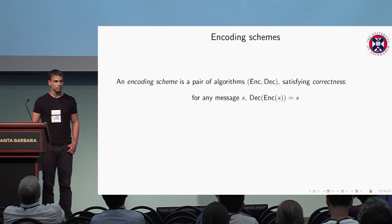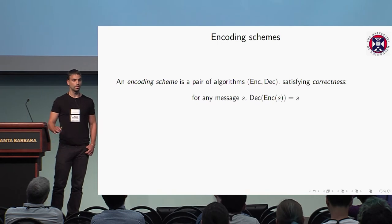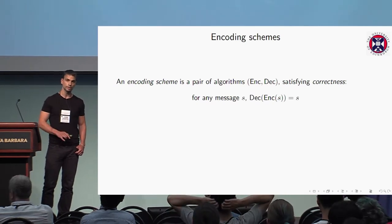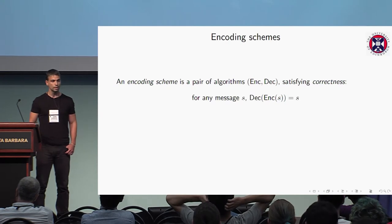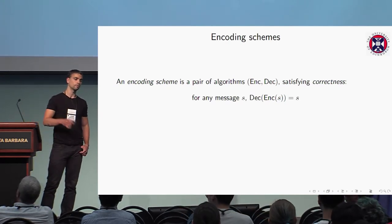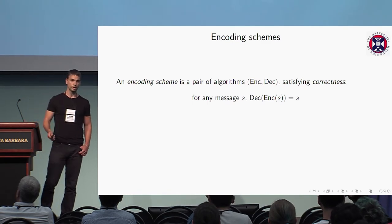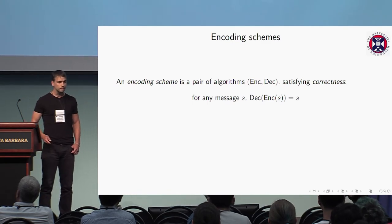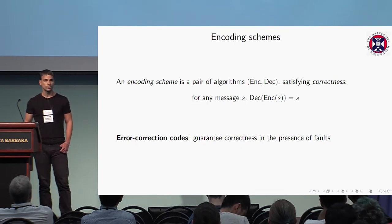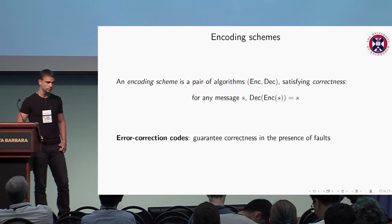Some very basic stuff. Any encoding scheme is a pair of an encoding procedure and a decoding procedure, and the minimum requirement is correctness. We want that for any message S, the decoding of the encoding of S should be equal to S. An example of an encoding scheme is an error correction code, which guarantees correctness if there is a bounded number of errors over the codeword.